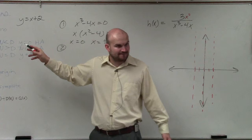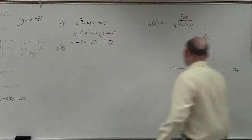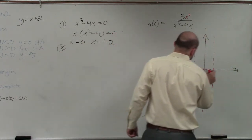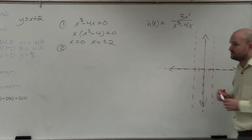Does everybody see that? So now I create a horizontal asymptote at y equals 0.